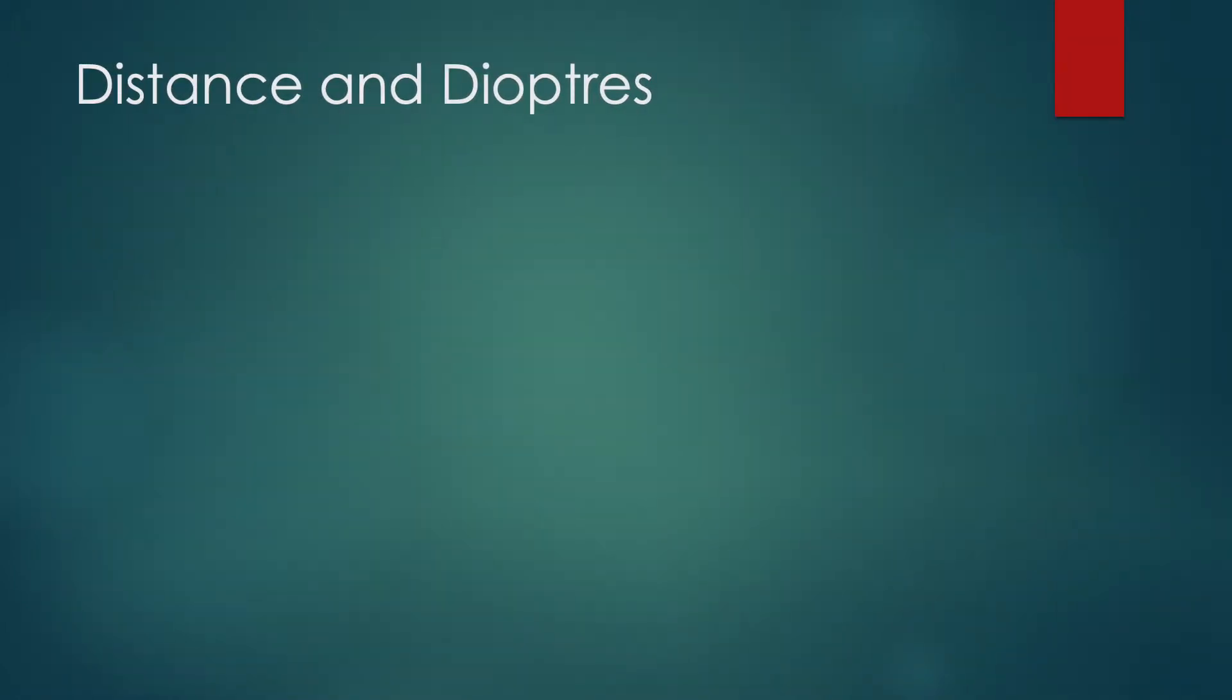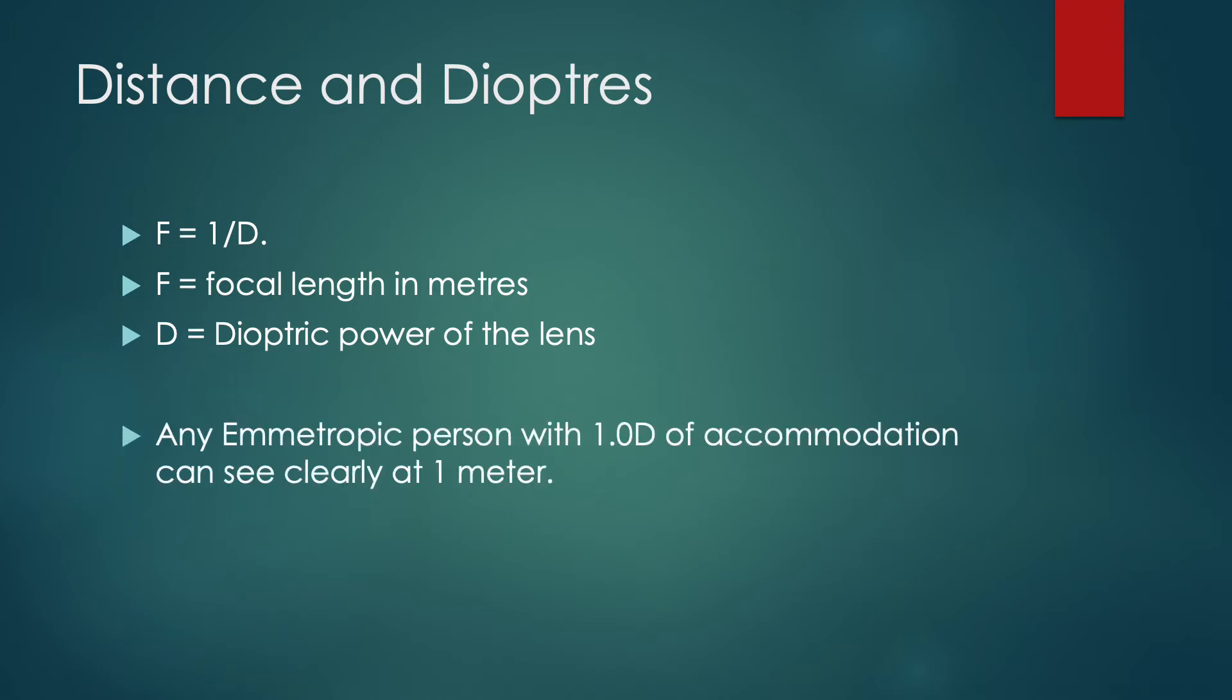In order to understand this, we need to jog up our memory a bit with this formula that states that F is equal to one by D, where F is the focal length in meters and D is the power in diopters. By using this formula, we understand that a person with one diopter of accommodation can see clearly at a distance of one meter. Which means that by placing a minus one diopter spherical lens, we force or stimulate one diopter of accommodation in the patient. Therefore, we are essentially and effectively checking the visual acuity at a distance of one meter. This is the fundamental principle of how a defocus curve works.